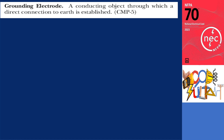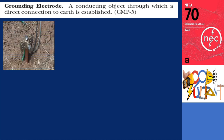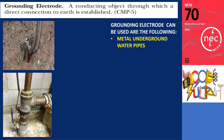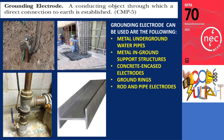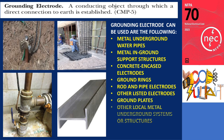What exactly is a grounding electrode? A grounding electrode is a conductive object that establishes a direct connection to the Earth. In the photo displayed, you can see a typical grounding electrode installation. Section 250.52 of the NEC outlines a list of items that can serve as grounding electrodes, including metal underground water pipes, metal and ground support structures, concrete encased electrodes, ground rings, rod and pipe electrodes, other listed electrodes, ground plates, and other local metal underground systems or structures. These various grounding electrodes provide a reliable pathway for electrical current to flow into the ground, ensuring the effectiveness of the grounding system.